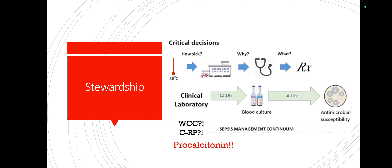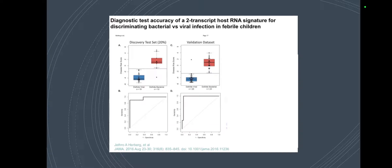Procalcitonin is more specific than CRP and white cell count, though there are arguments around it mainly because it's expensive and can't be used in every setting or every part of the world — even in well-developed settings it's still difficult to use it routinely. There are also emerging markers that look really promising for identifying sepsis — studies are coming up with RNA signatures that would help identify whether an infection is bacterial or viral.